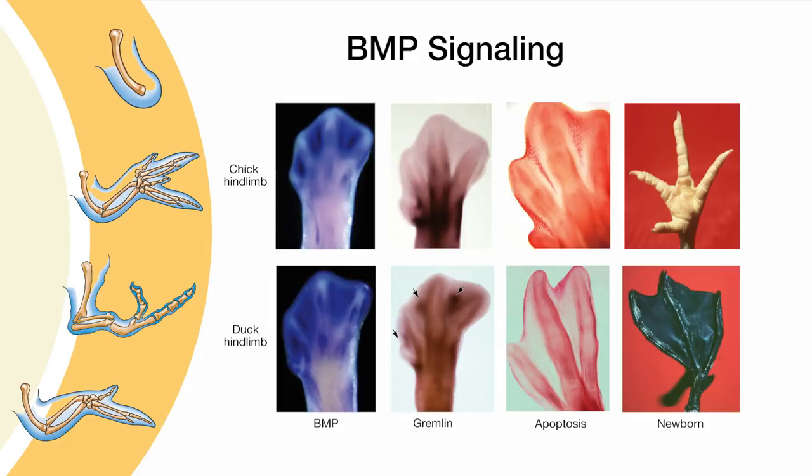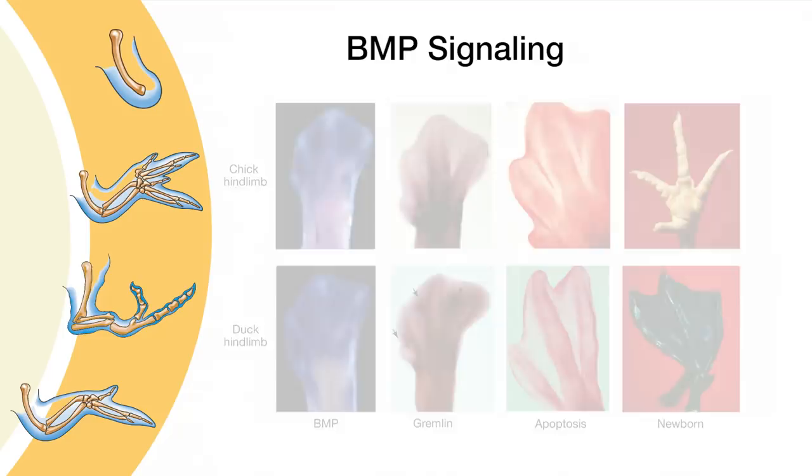This is a property of BMP signaling in the autopod that is inhibited by gremlin in the duck foot to maintain its webbing for paddling in the water. I decided to bring up BMPs at the end of this tutorial so that you remember they are responsible for stopping limb bud outgrowth. BMPs function to inhibit FGF8 in the AER, which, like in the duck's foot, is kept in check by mesenchymally expressed gremlin.